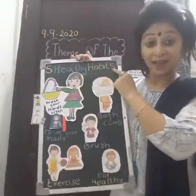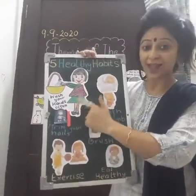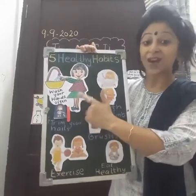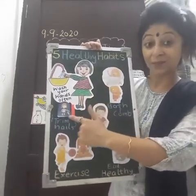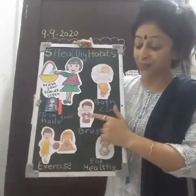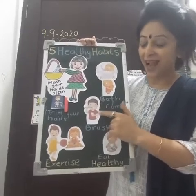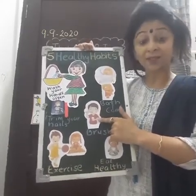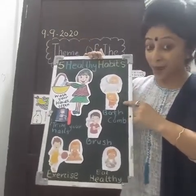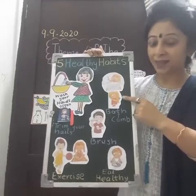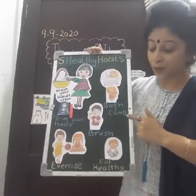Five healthy habits! Habit one says: wash your hands, wash your hands, wash your hands. Habit one says wash your hands and trim your nails. Habit two says: brush your teeth, brush your teeth, brush your teeth. Habit two says brush your teeth — brush it twice a day. Habit three says: take a bath, take a bath, take a bath. Habit three says take a bath and comb your hair.